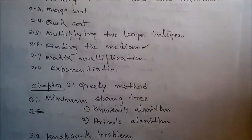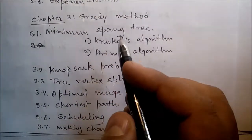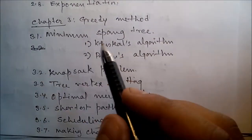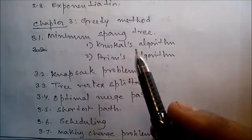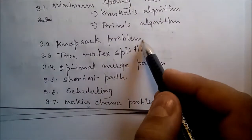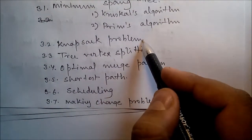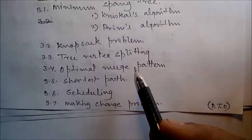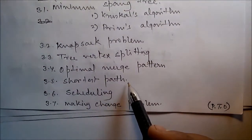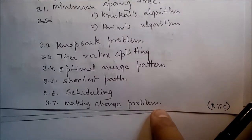In Chapter 3, we'll talk about the greedy method. This covers the minimum spanning tree, Kruskal's algorithm, Prim's algorithm, the knapsack problem, solving the knapsack problem using the greedy method, tree vertex splitting, optimal merge pattern, sorting, shortest path algorithm, scheduling, and the making change problem.